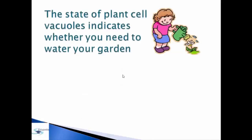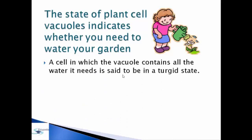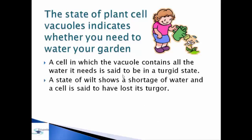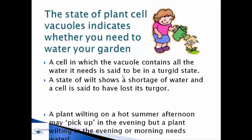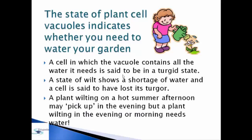The state of plant cell vacuoles indicates whether you need to water your garden. A cell in which the vacuole contains all the water it needs is said to be in a turgid state. A flaccid state shows a shortage of water and the cell has lost its turgor. A plant wilting on a hot summer afternoon may recover by evening, but a plant wilting in the evening or morning needs water.